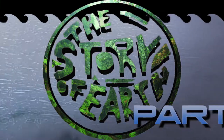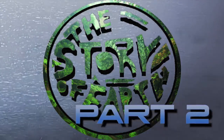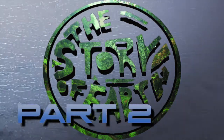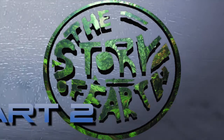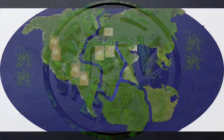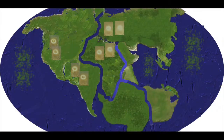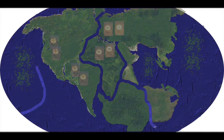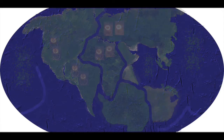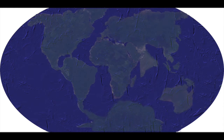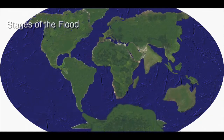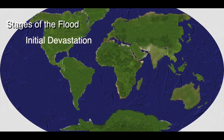The Story of Earth, Part 2. Part 1 of this series describes the first stage of the global flood: initial devastation, massive erosion, followed by rapid deposition of sediment, plants and animals. Part 2 will describe the third stage, which involves formation of virtually all our modern landscapes.